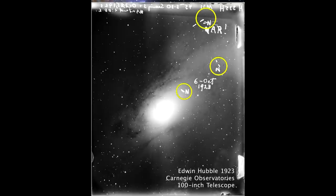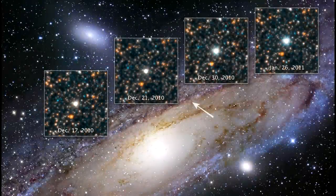He originally identified three stars and marked each of them with an N for Nova, a class of exploding star. Later, Hubble realized that the Nova at the top right was actually a Cepheid variable. He crossed out the N and wrote VAR for variable. He added an exclamation point because he knew that this variable would allow him to calculate the distance.